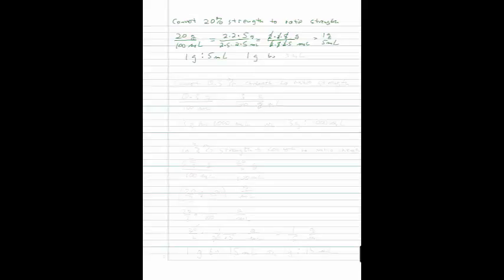If we have 0.3, we want to convert 0.3 percent strength to ratio strength. Well, 0.3 percent means 0.3 grams per 100 milliliters. Now we need to reduce this fraction, and that's going to be difficult for us to do. But the first thing we need to do is multiply top and bottom by 10. 0.3 times 10 is 3 grams, 100 times 10 is 1,000 milliliters.